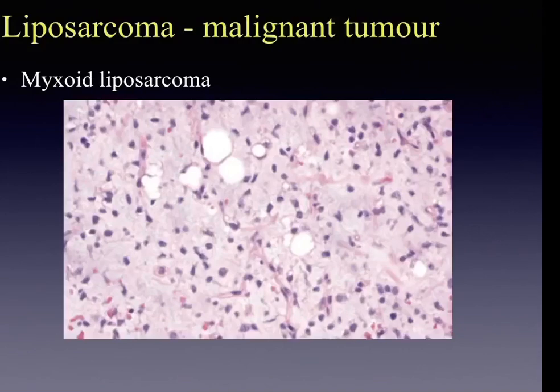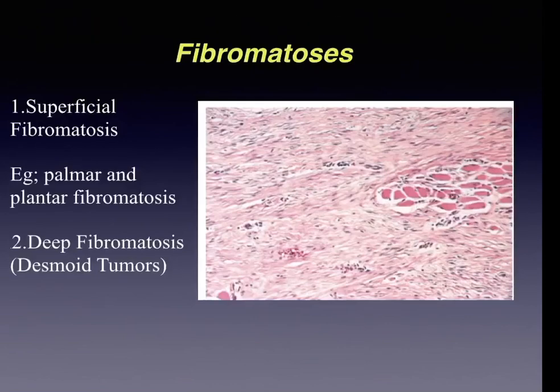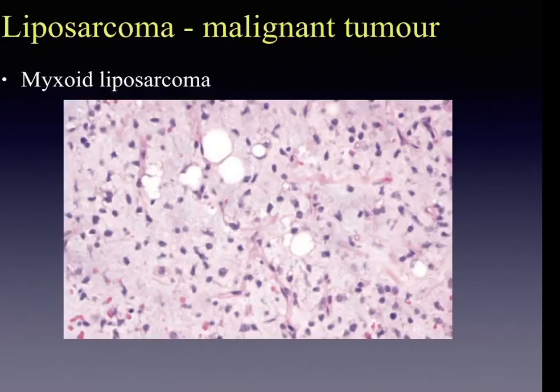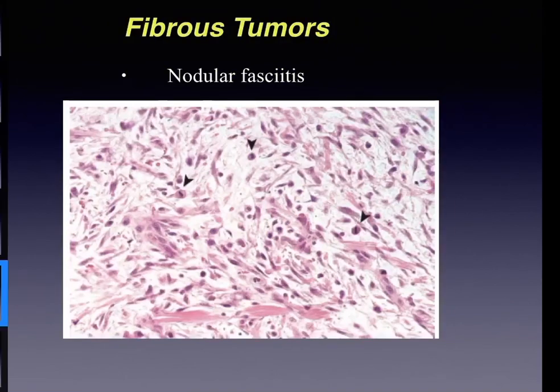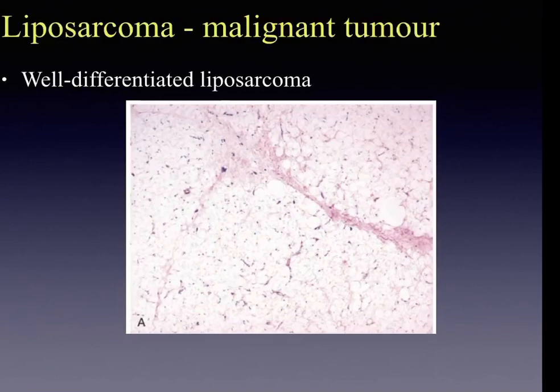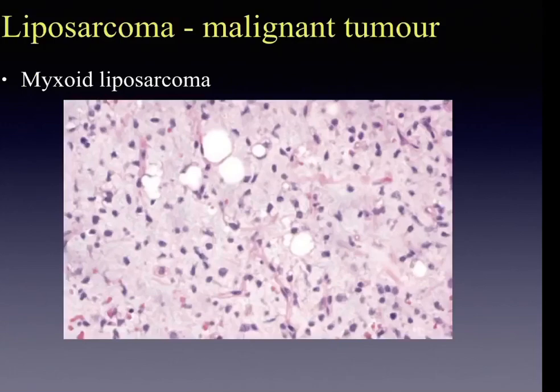Well-differentiated liposarcoma consists of mature adipocytes along with scattered spindle cells with hyperchromatic nuclei. Myxoid liposarcoma has abundant ground substance, a rich capillary network, and scattered immature adipocytes appearing as primitive round to stellate cells. Pleomorphic liposarcoma consists of sheets of anaplastic cells with bizarre nuclei and a variable amount of lipoblasts.